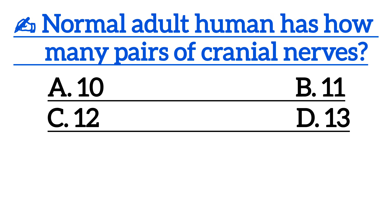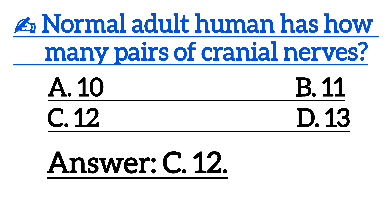Next one is: a normal adult human has how many pairs of cranial nerves? Correct answer is option C, 12.